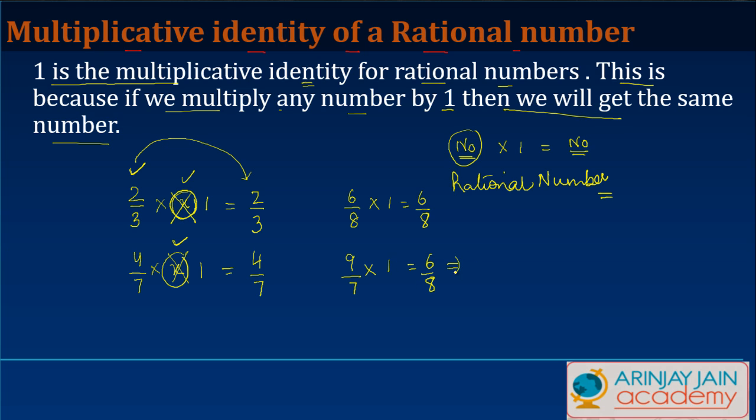One interesting thing is that 1 can always be written as x upon x, where x can take any value. So even if you multiply 9 by 7 by 10 upon 10, that also gives you the identity, because 10 by 10 equals 1. So that's what we know about the multiplicative identity of a rational number.